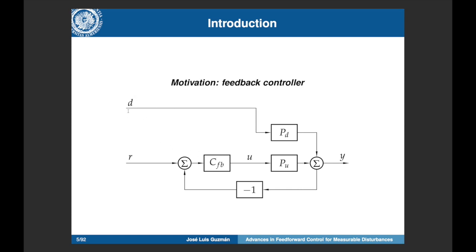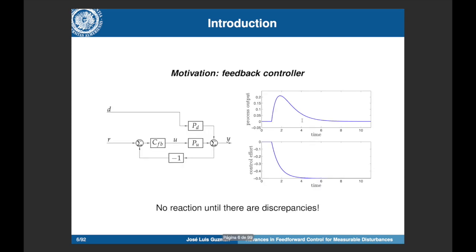We will use a step-like disturbance signal in this presentation, but the results can be extended to other types. When a disturbance arrives in a feedback control loop, a typical response is that once the process output is affected, the controller starts to react and tries to reject the disturbance, making the process output go back to the reference. It takes some time because feedback control is a reactive approach — the controller changes the control signal only after the process output has already been modified.